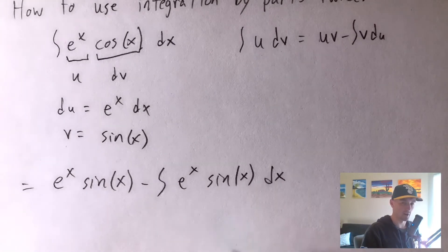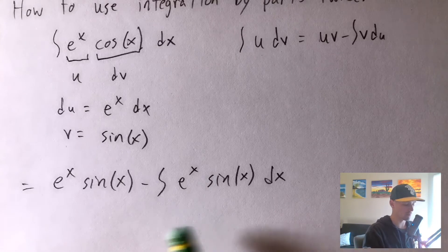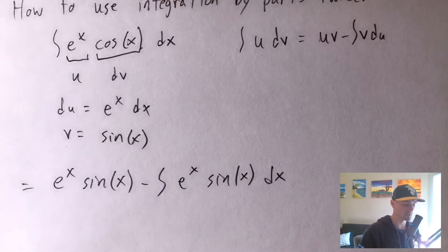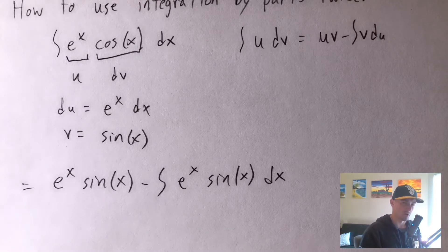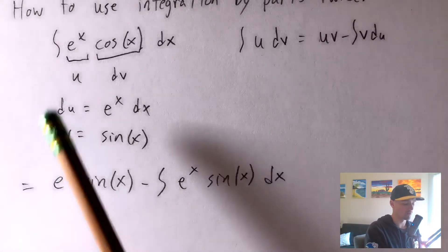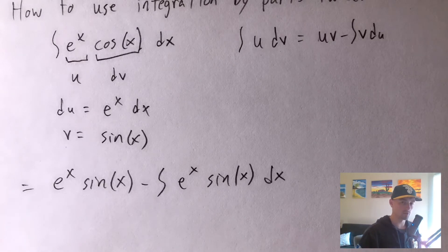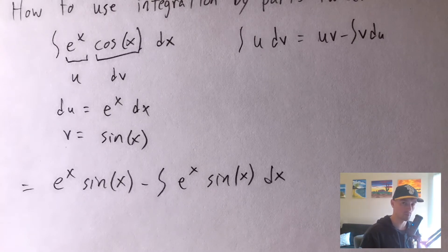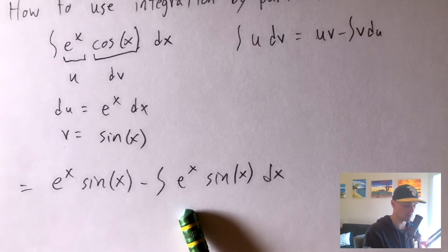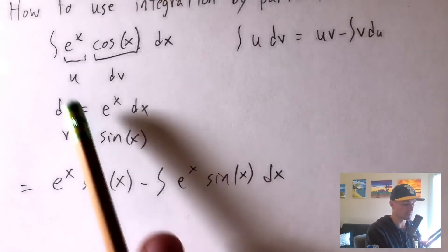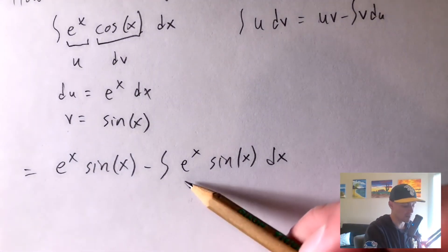Now we have a different integral, but it's not really any better than what we started with — it's just e to the x times sine x instead of cosine x, which isn't any easier to integrate. It seems like we're not getting anywhere. But think about it: taking the derivative or antiderivative of cosine and sine over and over cycles — it goes back and forth between positive and negative sine and cosine. So let's apply integration by parts again to this new integral.